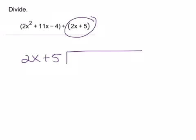Then the dividend, which is the polynomial that comes in front of the dividing sign, that goes underneath the division bar. So 2x squared plus 11x minus 4.